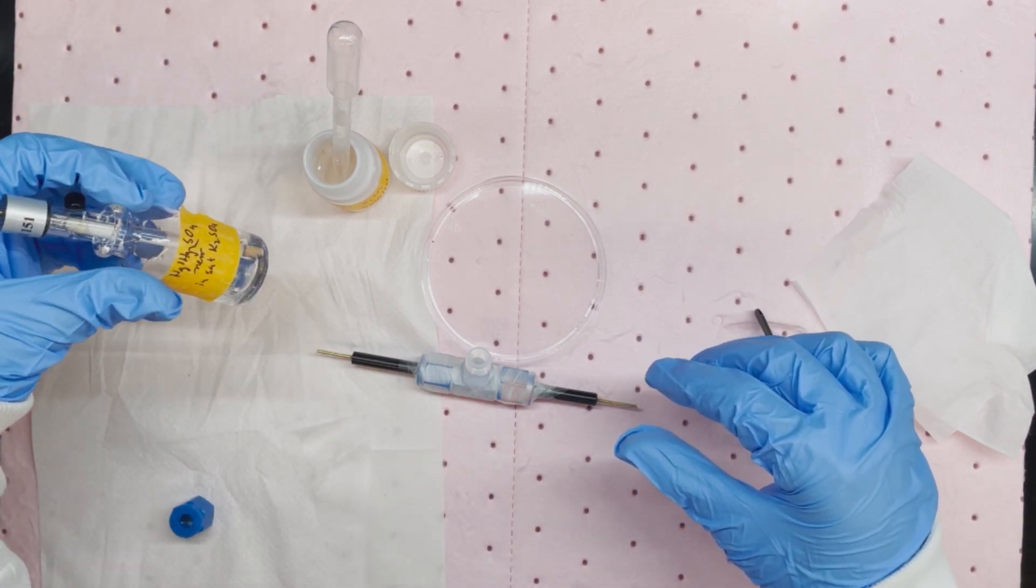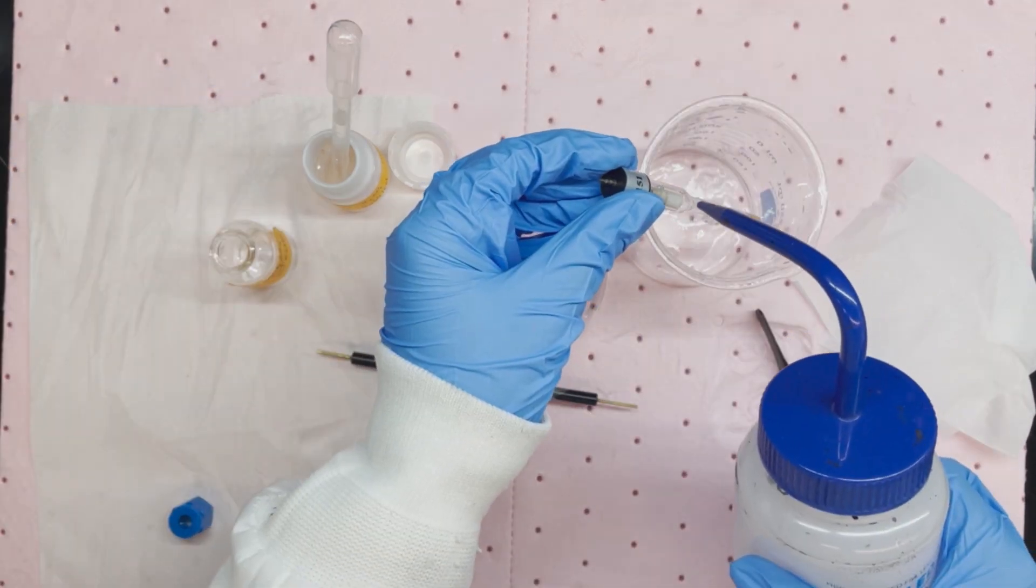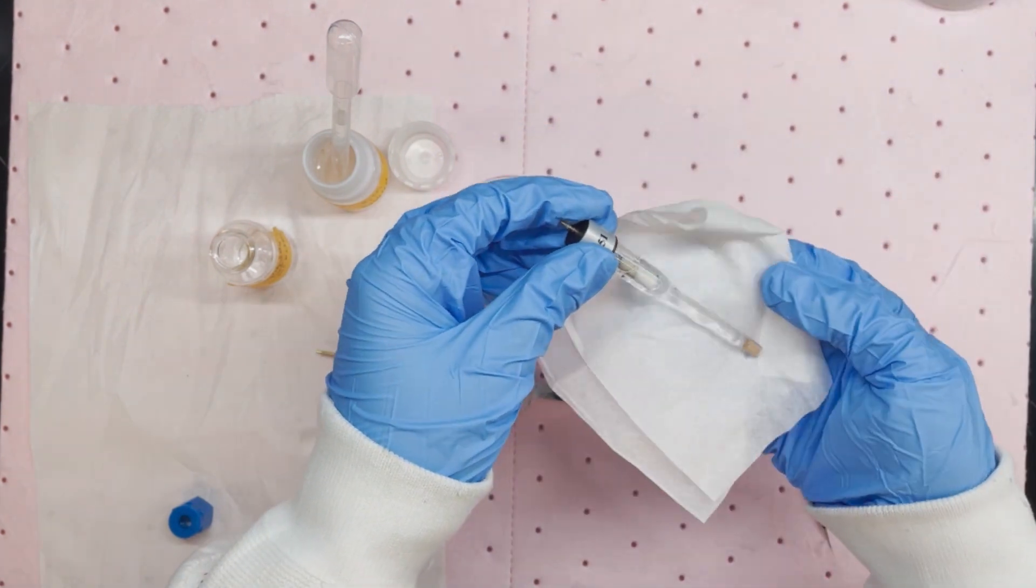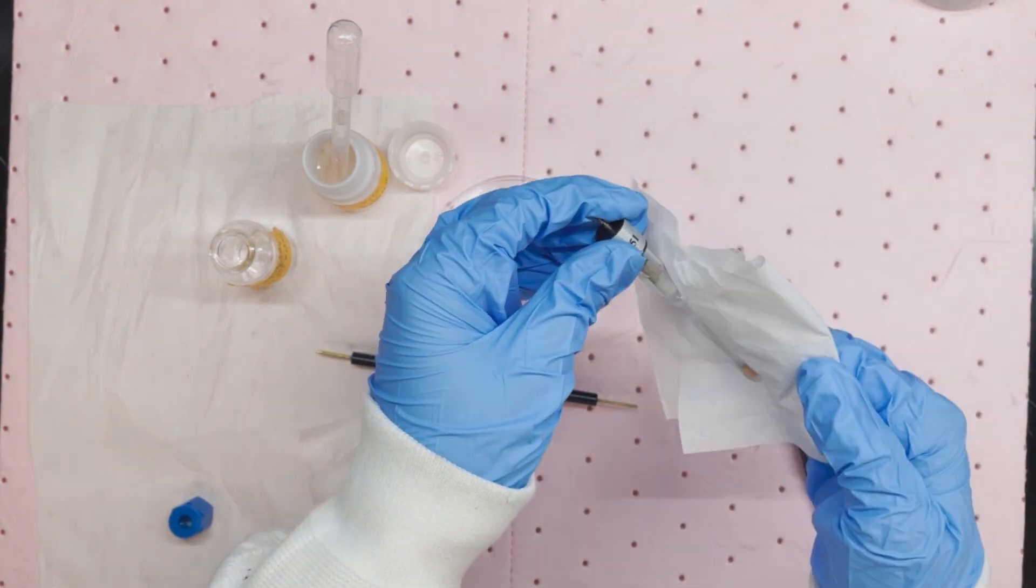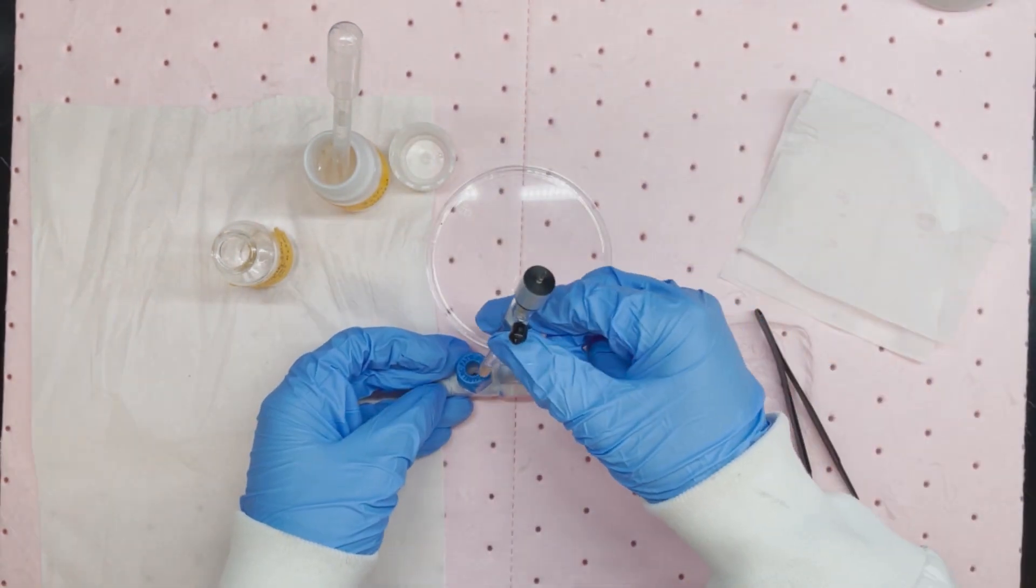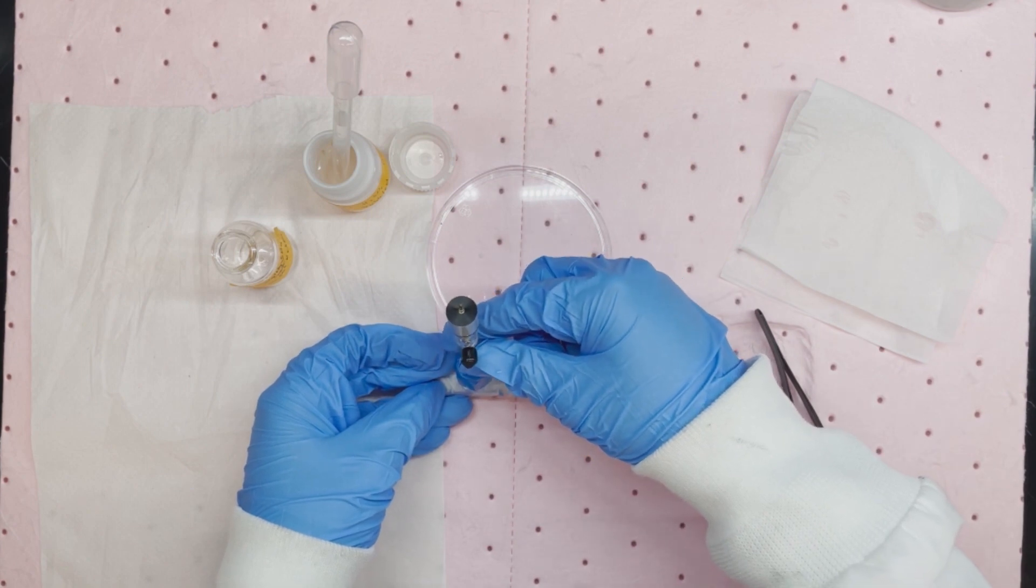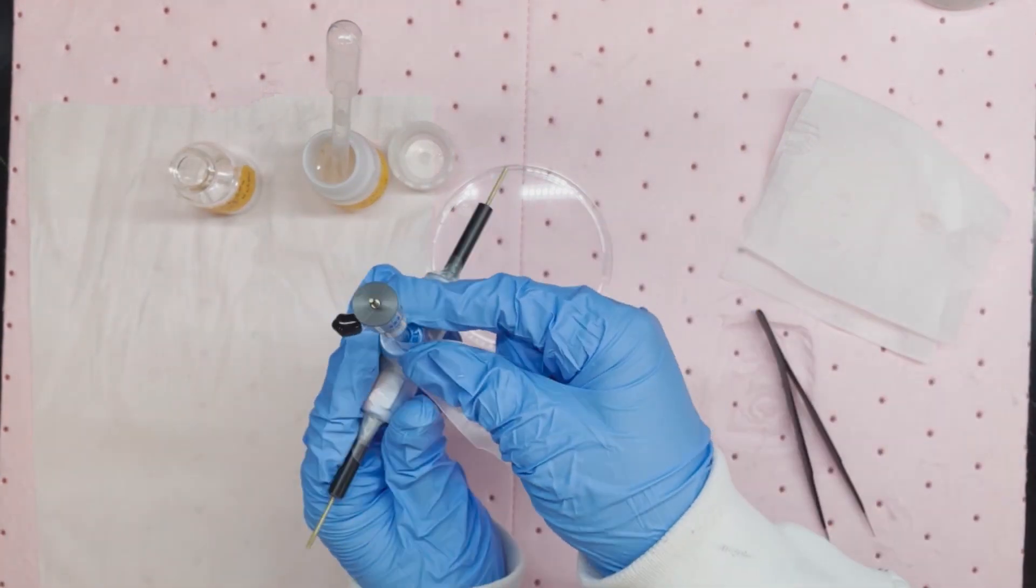Finally, install the reference electrode. Rinse the reference with DI water and gently dry it with a piece of kimwipe. Insert the reference electrode into the third opening. Use parafilm to secure its position.